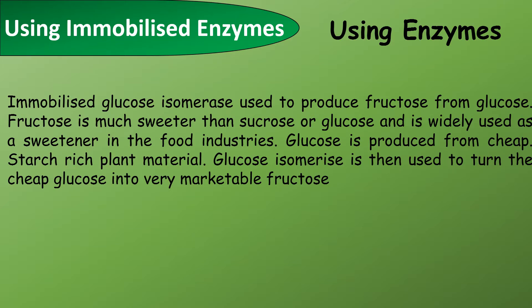Immobilized glucose isomerase is used to produce fructose from glucose. Fructose is much sweeter than glucose or sucrose and is widely used as a sweetener in foods. Glucose is produced from cheap, starch-rich plants, and glucose isomerase then converts it into fructose by a process that changes the structure of the glucose molecule.